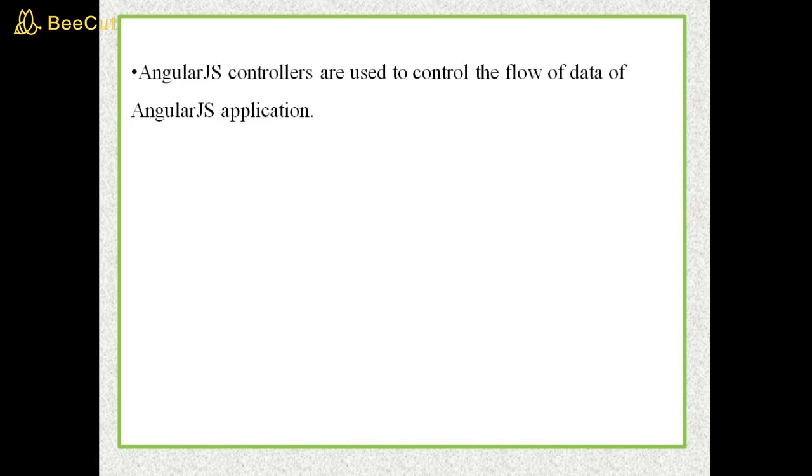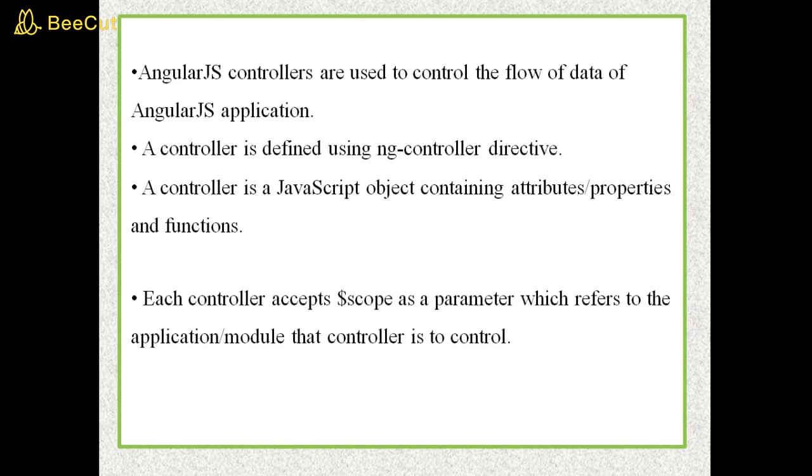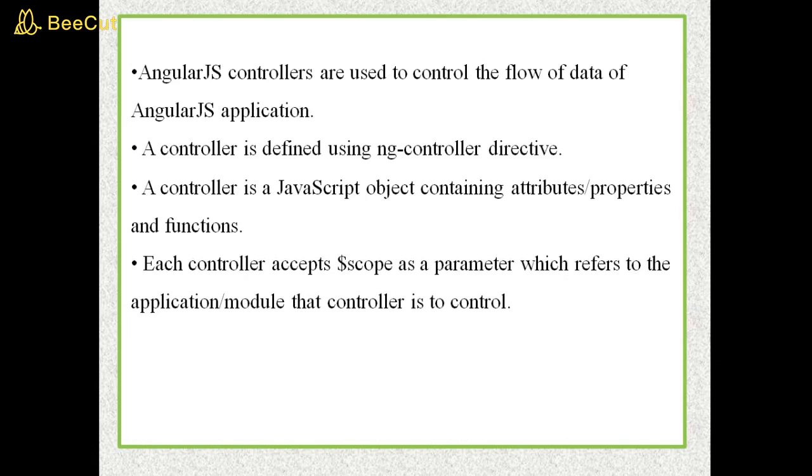AngularJS controllers are used to control the flow of data of AngularJS application. A controller is defined using ngController directive. A controller is a JavaScript object containing attributes or properties and functions. Each controller accepts $scope as a parameter which refers to the application or module that controller is to control.